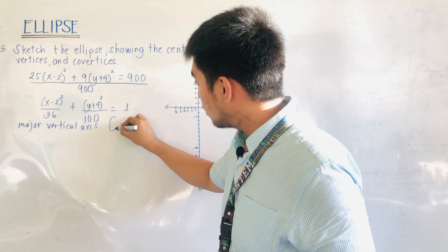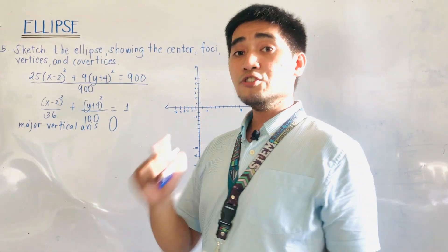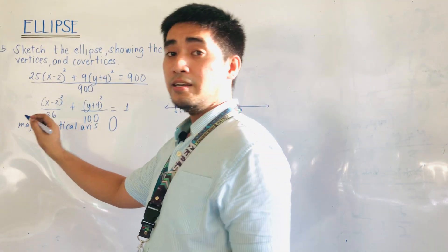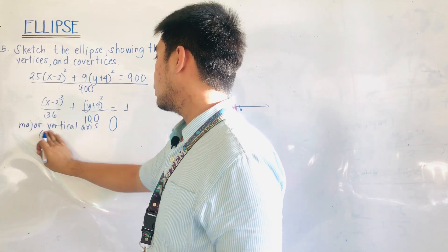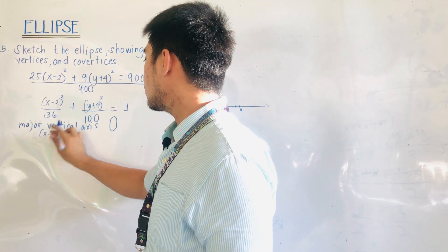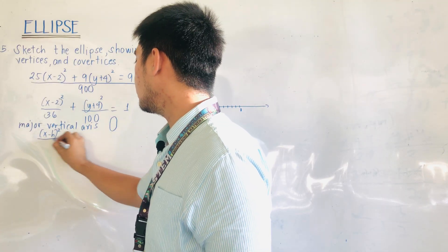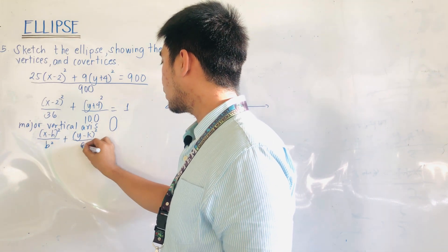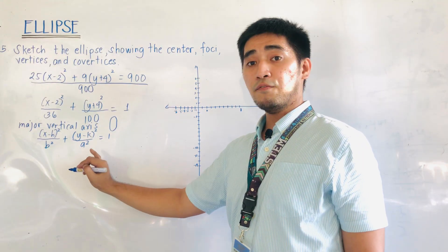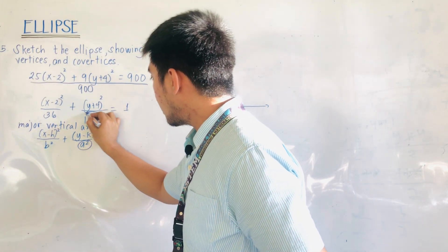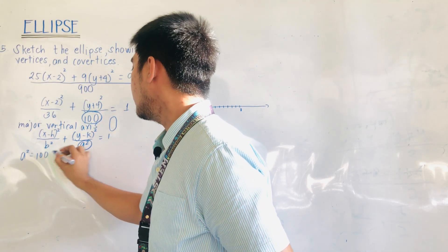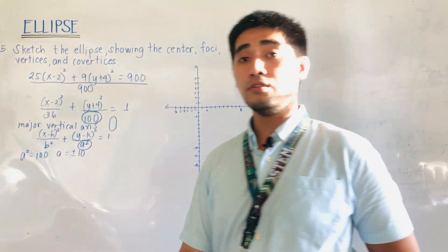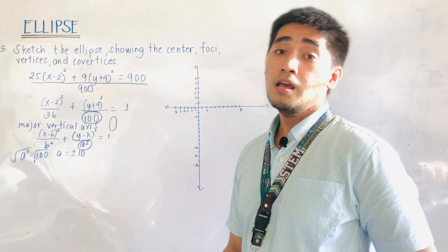Our ellipse will have a vertical orientation. Let us now identify the values of a², b², and c². For a vertical major axis, the formula is (x minus h)² over b² plus (y minus k)² over a² equals 1. Since a² is the larger denominator, a² equals 100, so a equals ±10.